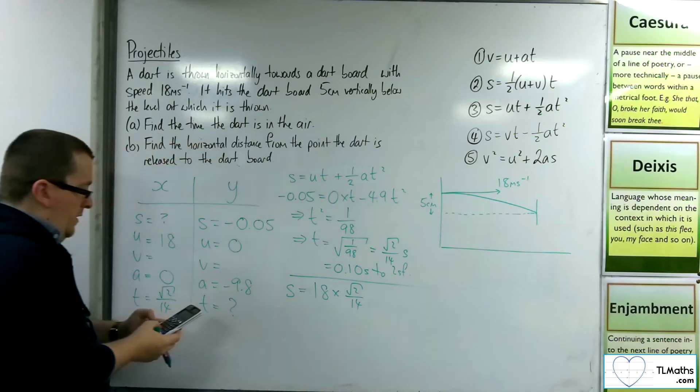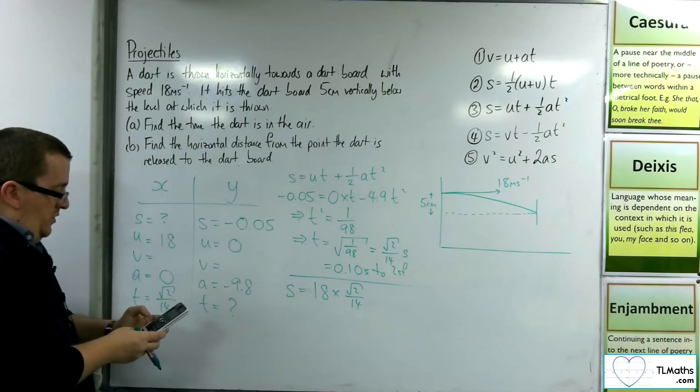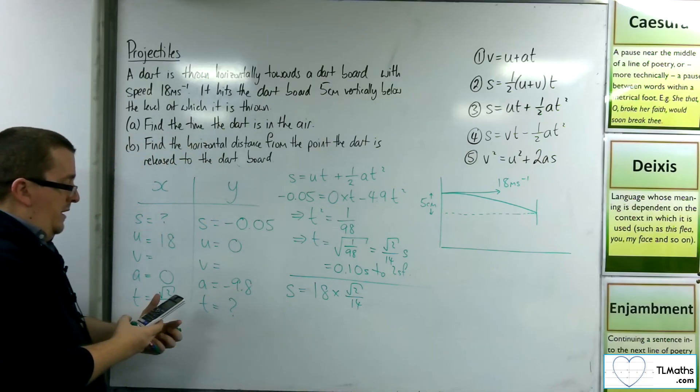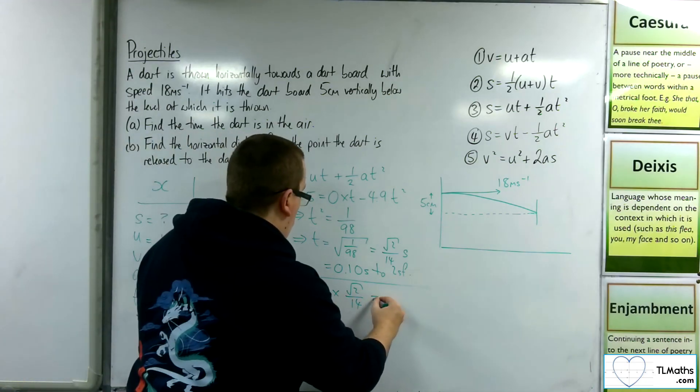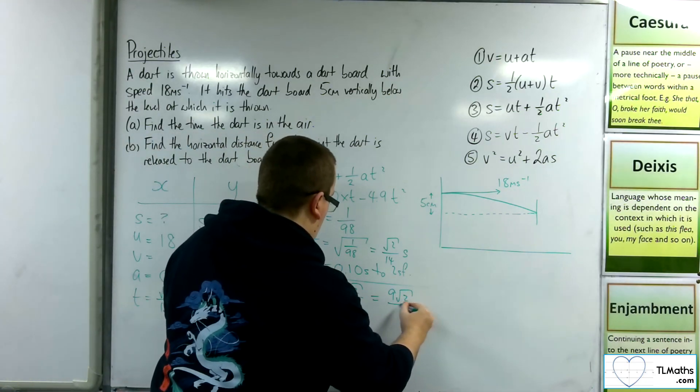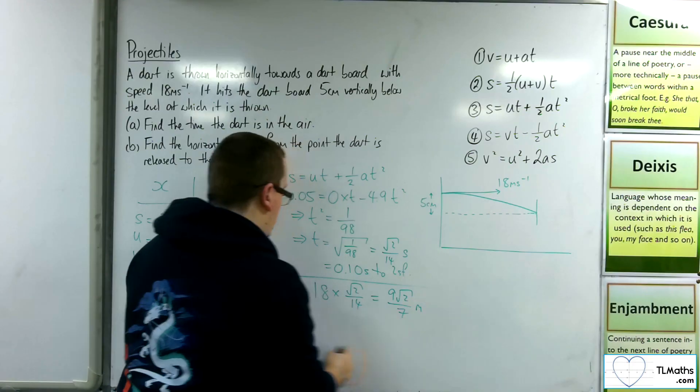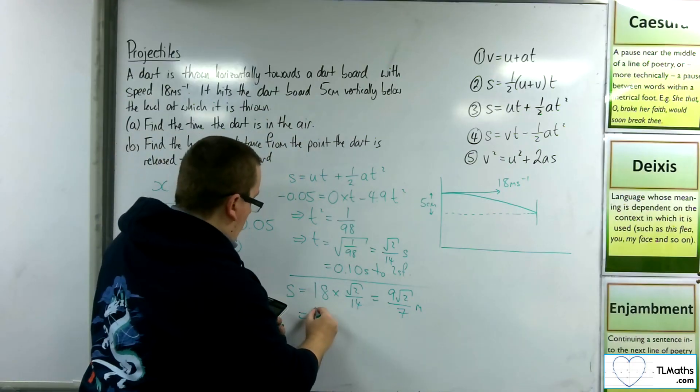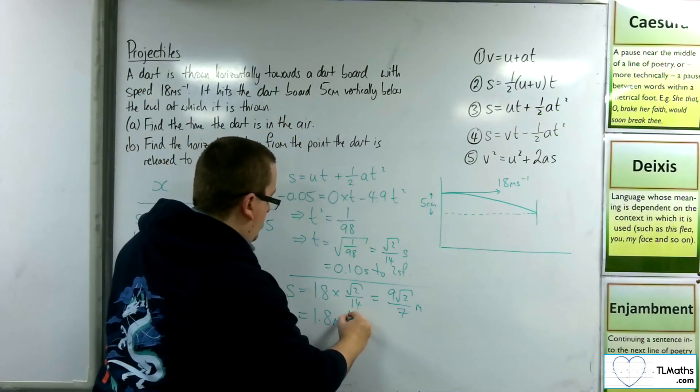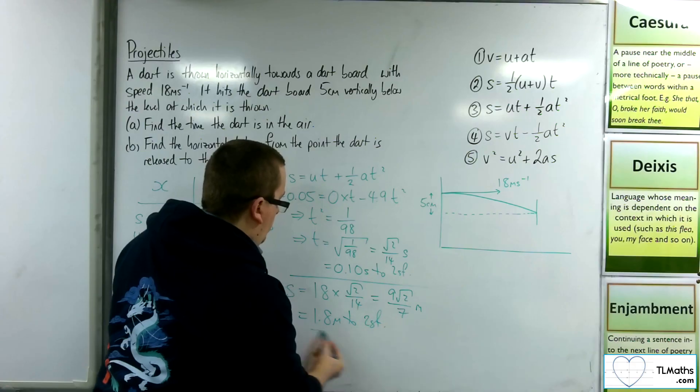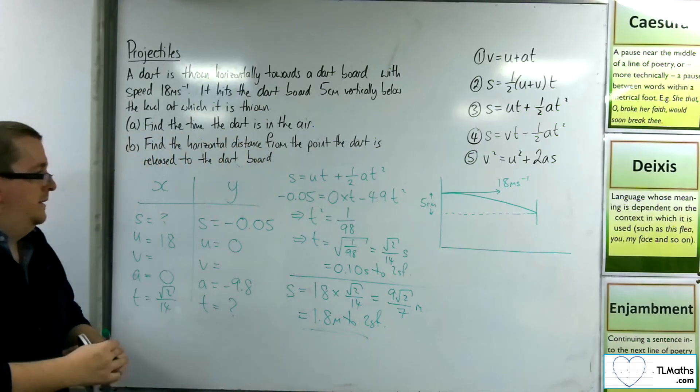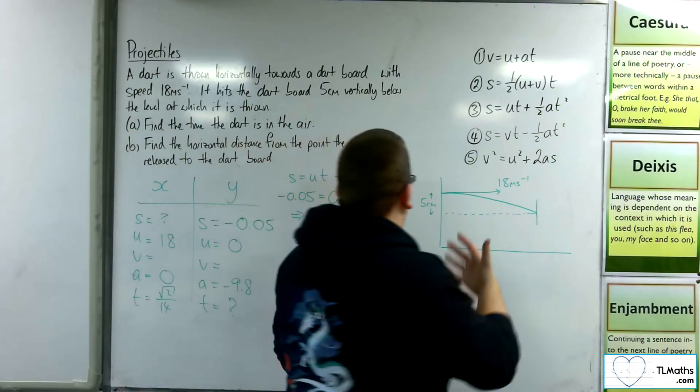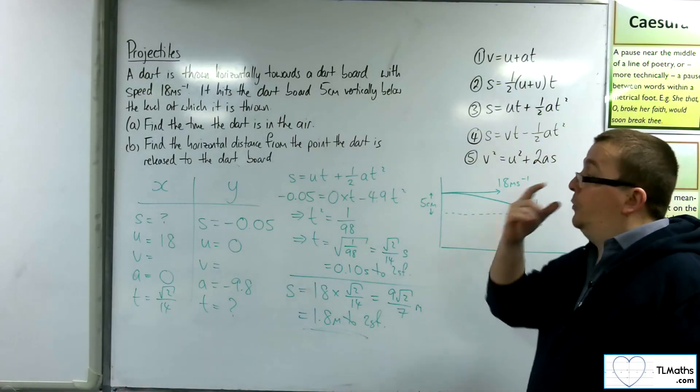So we've got 18 times root 2 divided by 14 is 9 root 2 over 7 meters, which is 1.8 meters to two significant figures. And so they are the answers to this question.